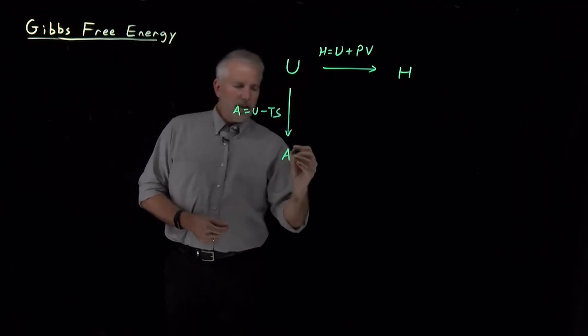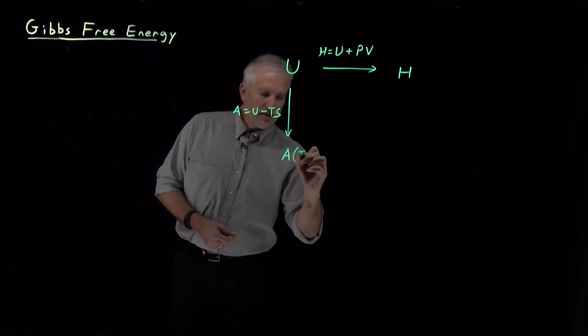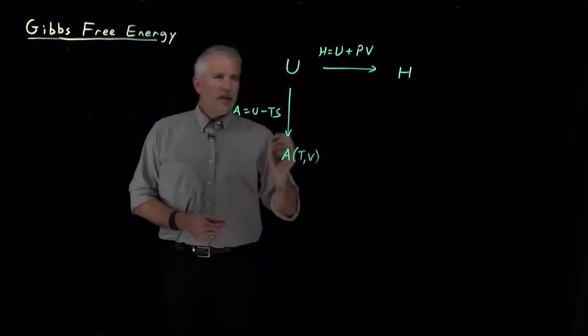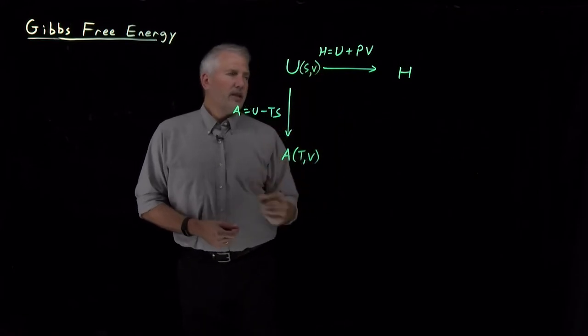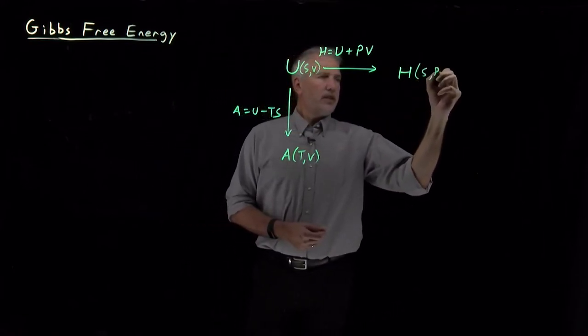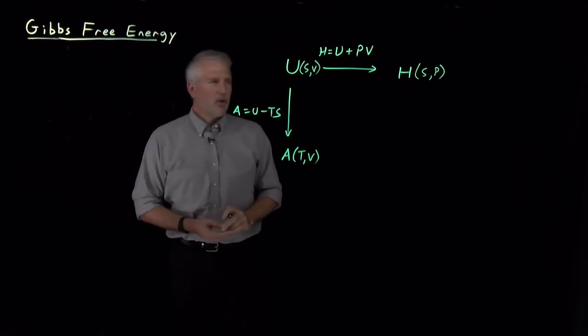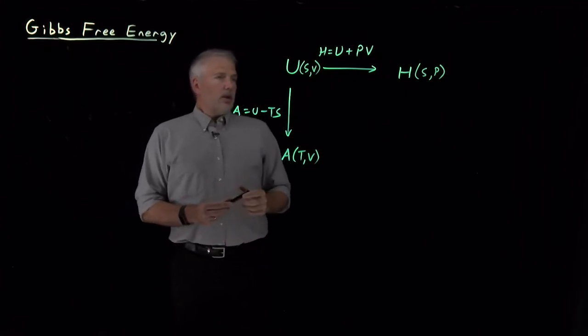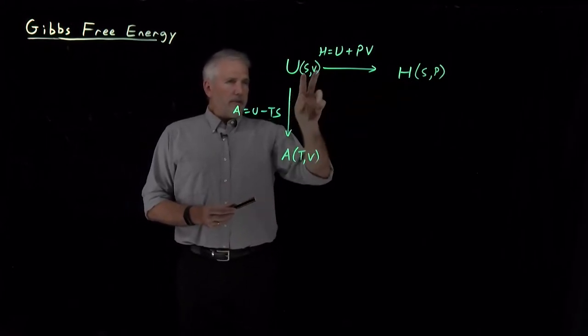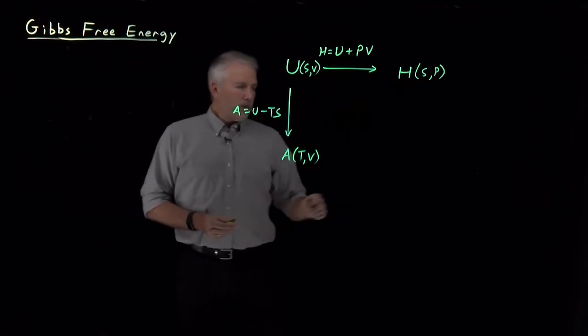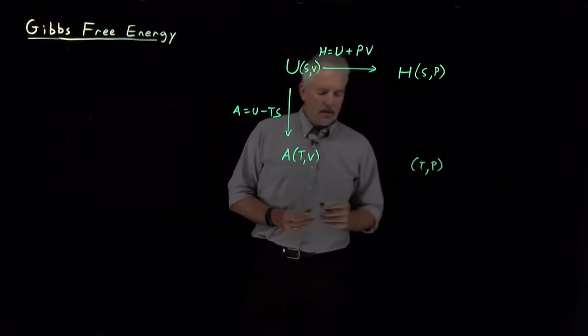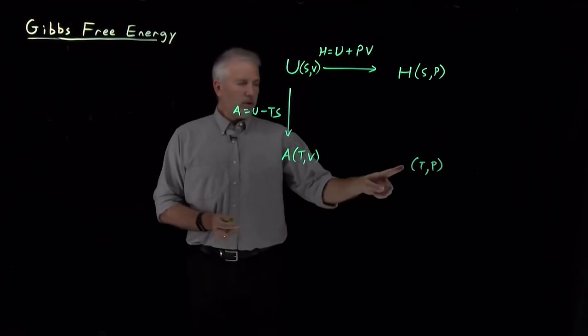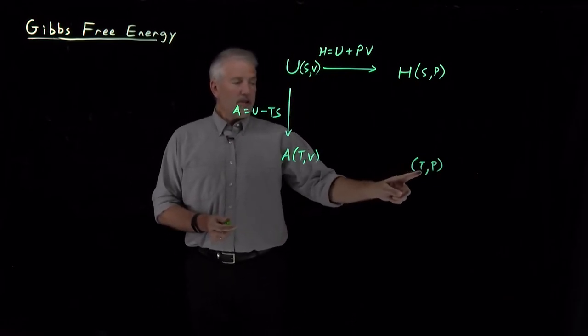So things we know about these energies, the Helmholtz free energy is a natural function of T and V. The internal energy we've seen is a natural function of S and V. Enthalpy is a natural function of S and P. So these are three different combinations of these natural variables. What we're really interested in is some function which is a natural function of T and P.